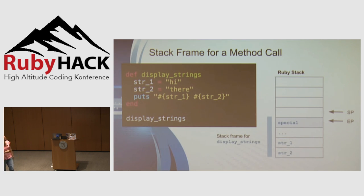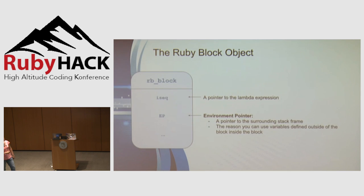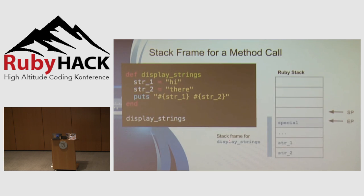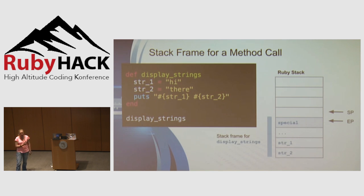This environment pointer is related to but slightly different from the one on the block object. The block's environment pointer property is static — it gets the value of Ruby's current environment pointer when the block is created and doesn't change for as long as the block exists. Ruby's own environment pointer, by contrast, changes as your program executes and as whichever method is executing changes.